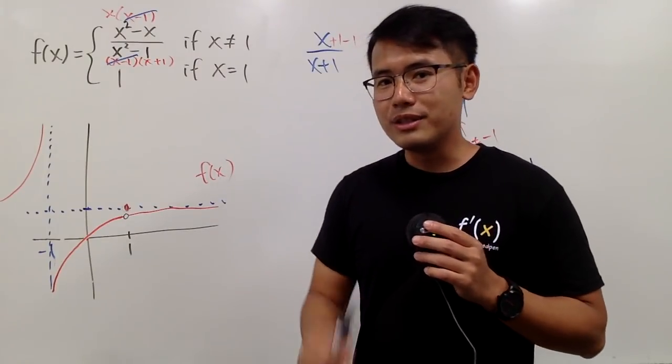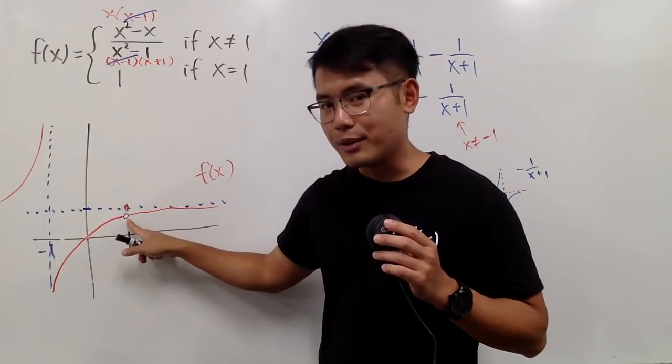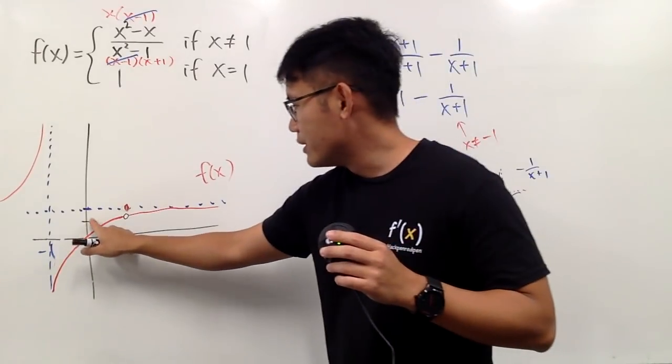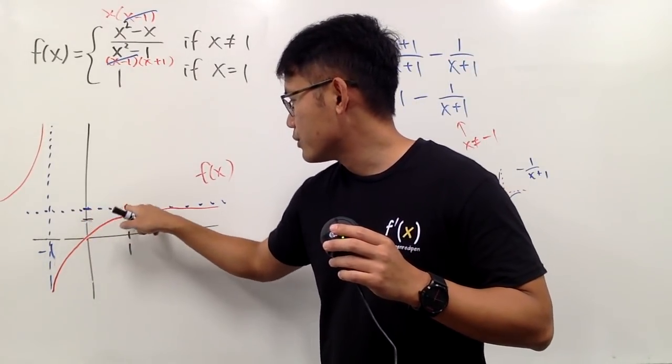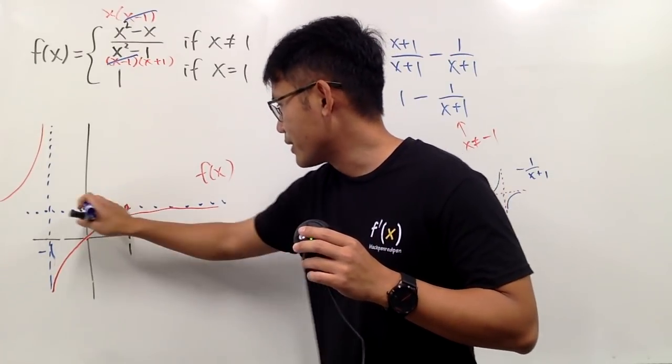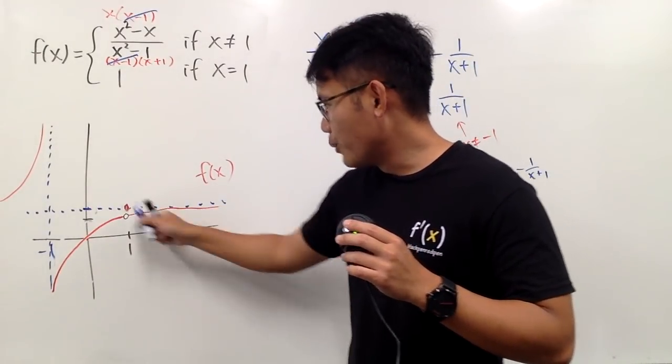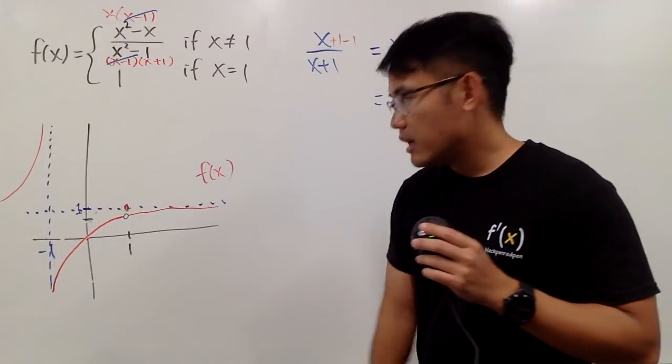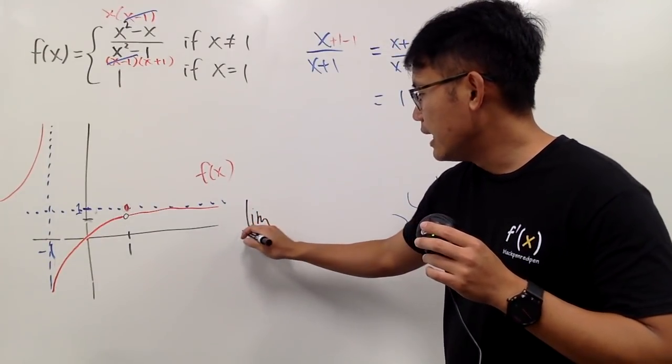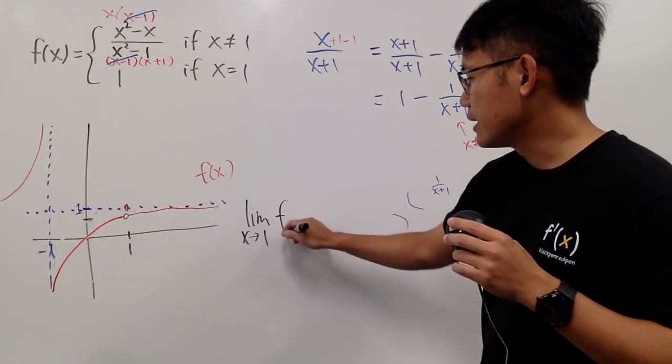Okay, so another interesting question is that, well, we do have a removable discontinuity, right? And what's the y value right here? What's the y value of this open circle? The red circle right here was at 1. So let me just put down 1 right here. But how about, let me just do like this. How about the open circle? What's the y value for that? Well, in order for us to figure this out, all we have to do is actually to take the limit as x approaching 1 of the function.